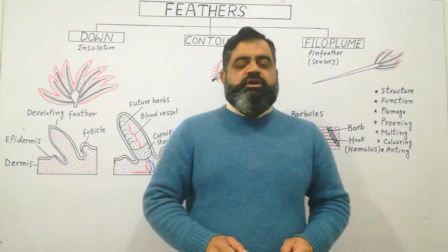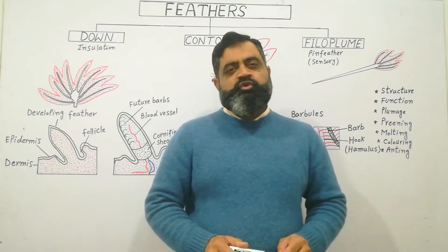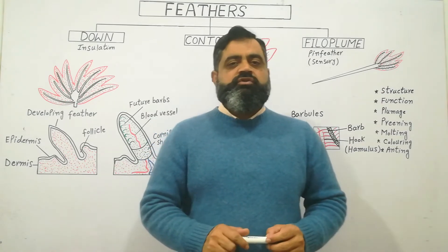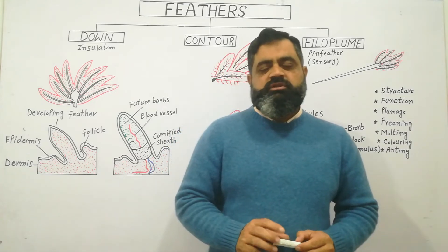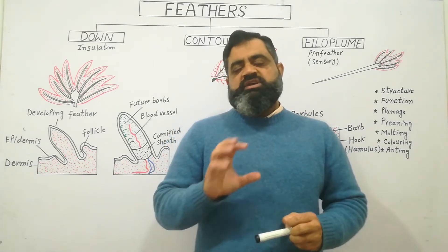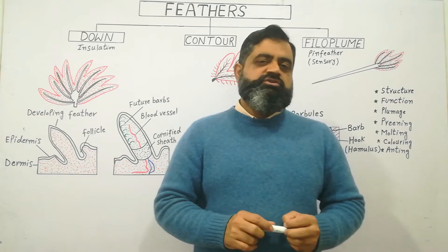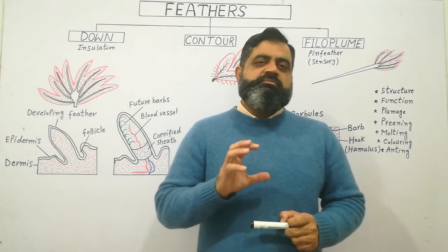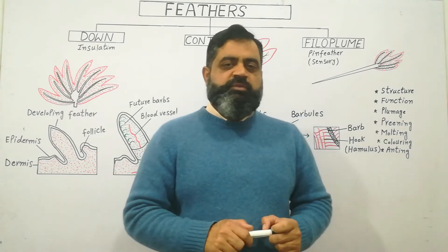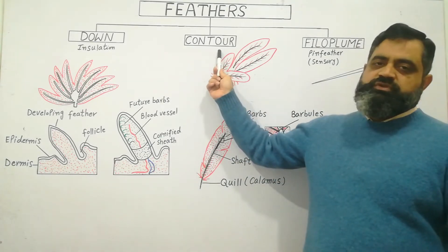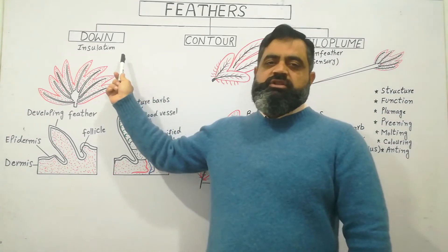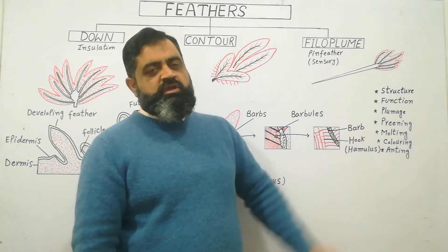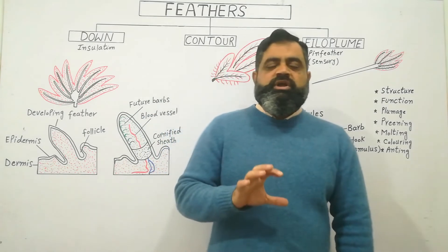Hello to all students. Today we are going to discuss the structure, function, and types of different feathers in birds. As you know, all birds usually have an exoskeleton in the form of feathers on their body surface. There are three different types of feathers in birds: number one, the contour feather; number two, the down feather; and number three, the filoplume feather.